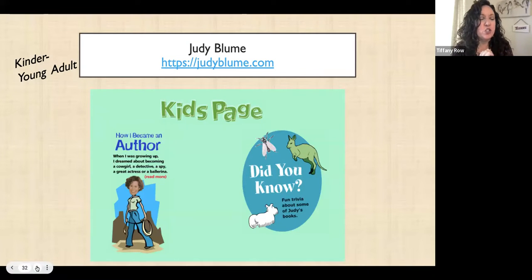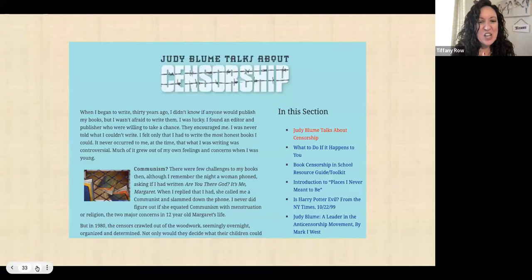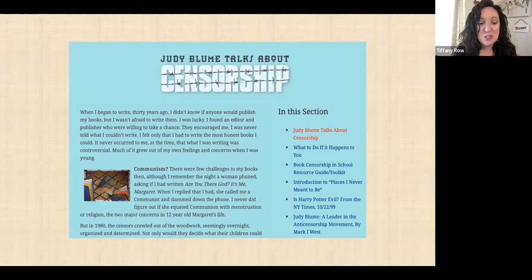And now Judy Blume — she has books appropriate from kinder through young adult. She's got a great author's page where she talks about how she became an author, some fun trivia, and she has a whole kid's page and a whole teacher's page. For older students, she has this really interesting piece about censorship that I think would spark a rich discussion in your class — maybe fourth, fifth, or sixth grade. She was actually accused of communism for her book Are You There God? It's Me, Margaret, which was censored in 1980 in some places. I had never heard this before — it was really interesting to read about.